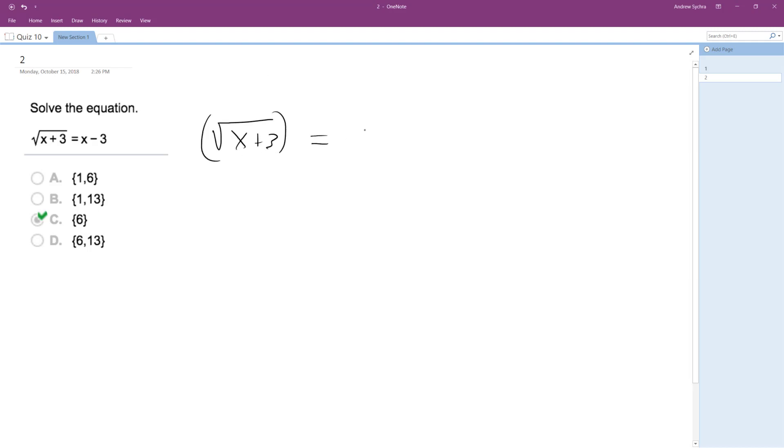So we'll square both sides, so we get x minus 3. So on the left, we're just going to end up with x plus 3, and this is going to become x squared minus 6x plus 9.